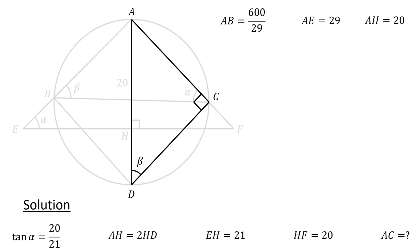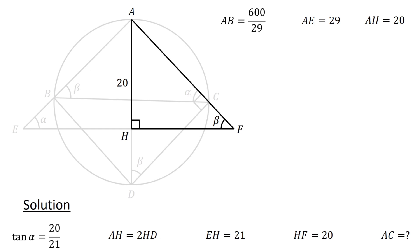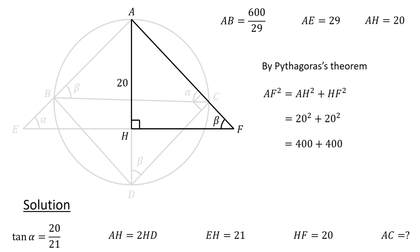Next, consider triangle ADC and triangle AHF. Since this angle is common to both triangles, and angle AHF equals angle DCA equals 90 degrees, therefore we have angle HFA equals angle ADC equals beta. Next, consider triangle AHF. Let's calculate the length of AF. By Pythagoras' theorem, AF squared equals AH squared plus HF squared. Since AH equals 20 units and HF equals 20 units, AF squared equals 20² plus 20², which equals 400 plus 400, or 800. Taking the square root, we thus obtain AF equals 20 square root 2 units.